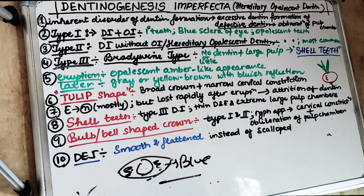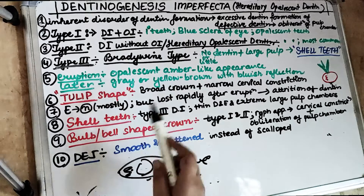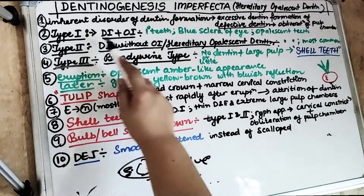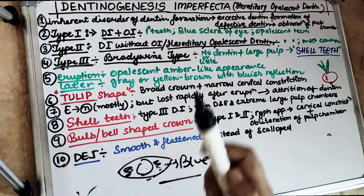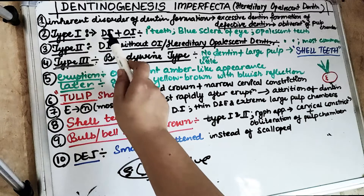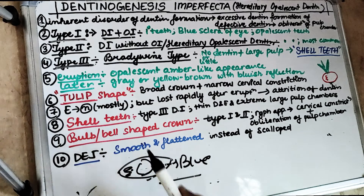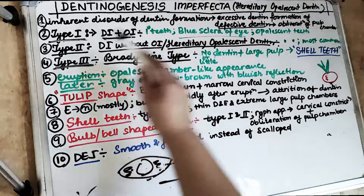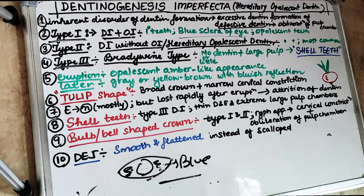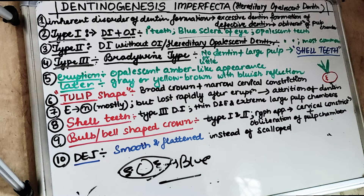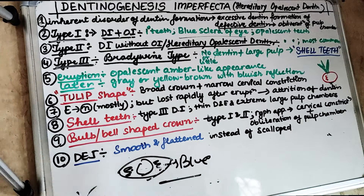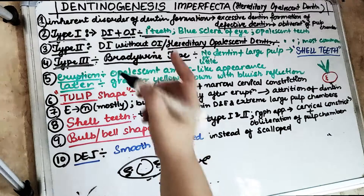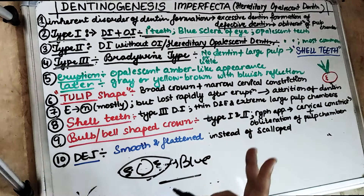Blue sclera is also seen in iron deficiency anemia, but we are not focused on that here. So Dentinogenesis Imperfecta type 1 is when it is associated with Osteogenesis Imperfecta, and therefore blue sclera is a characteristic feature of type 1. In all other types of DI, both dentitions are affected equally, but in type 1, the primary teeth are most commonly affected.